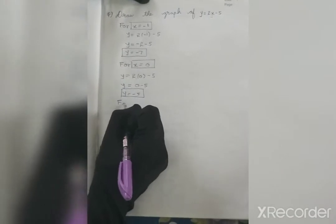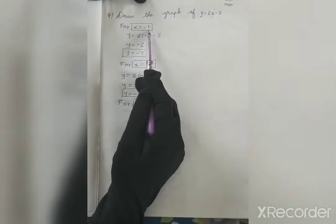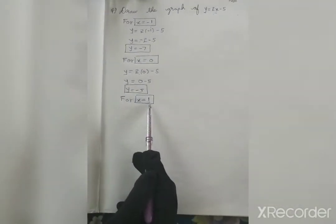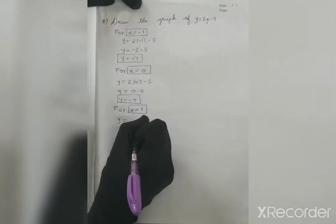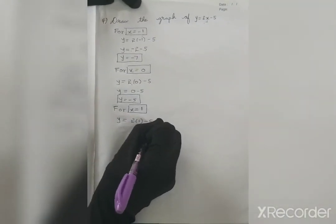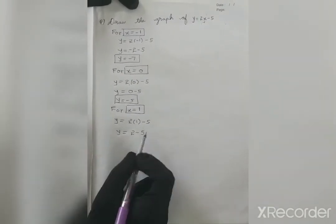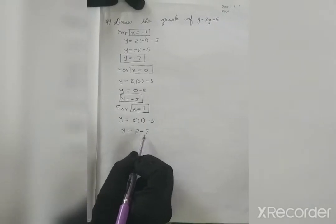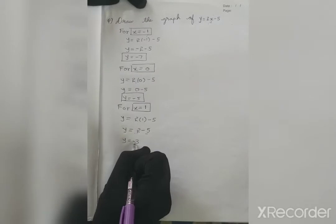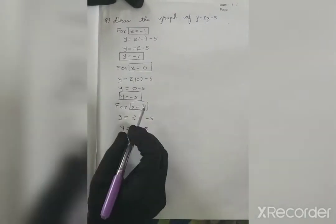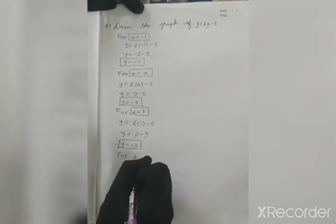Now I will substitute for x is equal to 1 — that is a positive value. I will substitute 1 in this equation: y is equal to 2 into 1 minus 5, so y is equal to 2 minus 5. Minus 5 and plus 2 means you have to subtract: 5 minus 2 is 3, and the bigger number sign is minus, so y is equal to minus 3. When x is 1, y is minus 3.